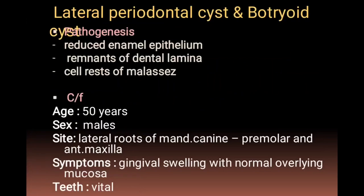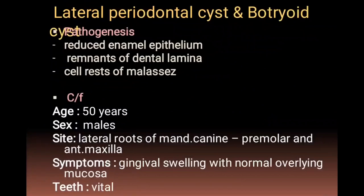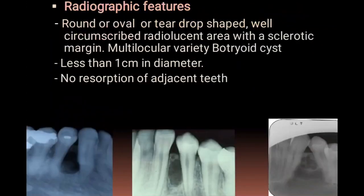The lateral periodontal cyst and botryoid cyst arise from reduced enamel epithelium, cell rests of Malassez, or remnants of dental lamina. Most commonly seen around 50 years of age and in males. Sites include lateral roots of mandibular premolars and anterior maxilla. Symptoms include gingival swelling with normal overlying mucosa, and in most cases the teeth remain vital — unlike many cysts where the associated tooth becomes non-vital.